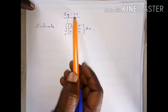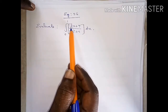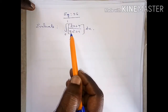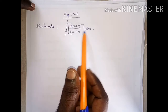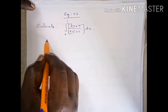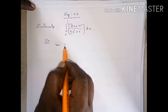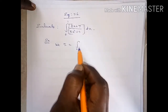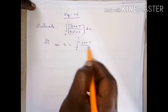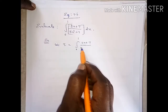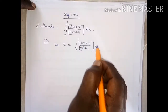Example 9.6: Evaluate the integral from 0 to 1 of (2x plus 7) divided by (5x squared plus 9) dx. Let I equal to the integral from 0 to 1 of (2x plus 7) divided by (5x squared plus 9) into dx.